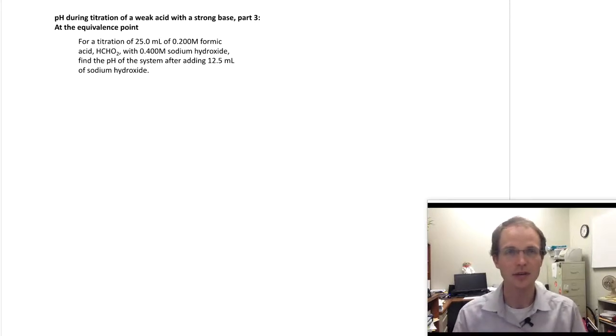And here, we're going to be looking at how do we calculate the pH of a titration at the equivalence point. So you can see our problem up there on the board. We're doing a titration of 25 milliliters of 0.2 molar formic acid with 0.4 molar sodium hydroxide. We're finding the pH of the solution after 12.5 milliliters of sodium hydroxide has been added.